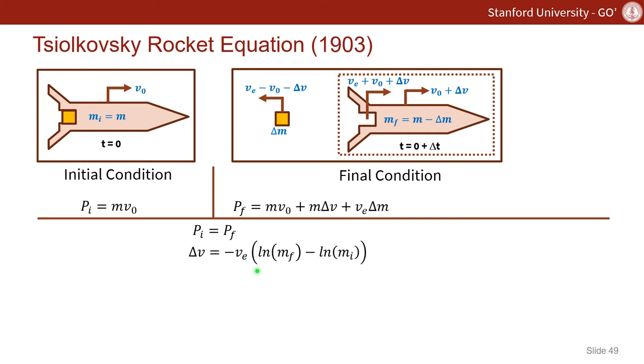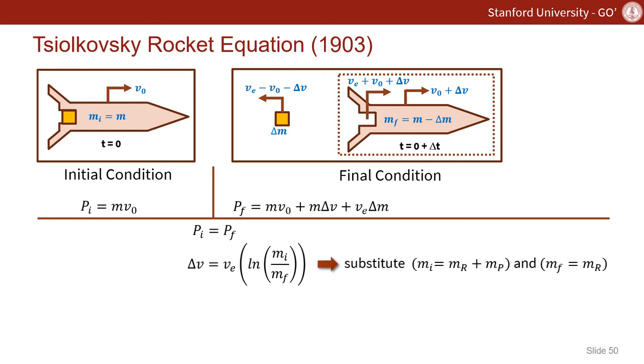Now that we have this integration result, let's simplify it further. As our final step, we'll substitute the initial mass as the mass of the rocket plus mass of the propellant, and the final mass is just the mass of the rocket. And we're left with the Tsiolkovsky rocket equation.